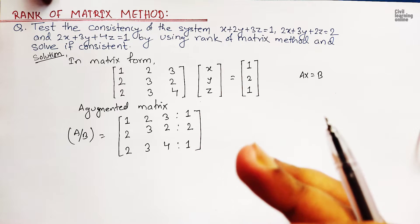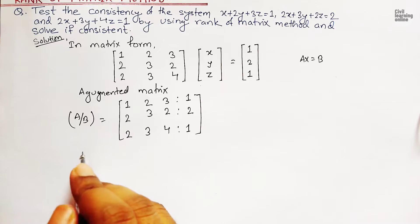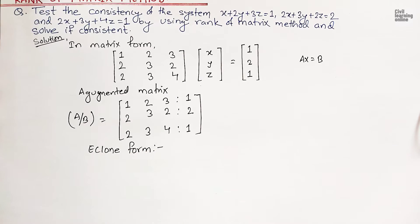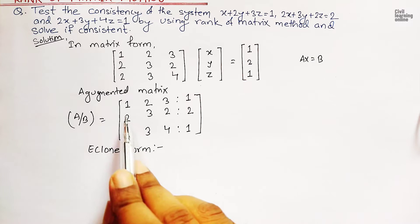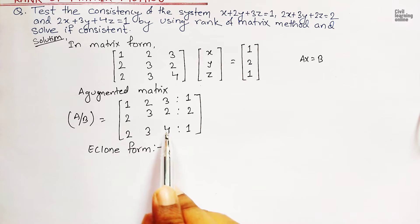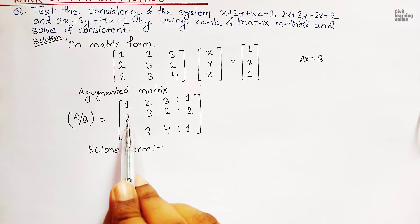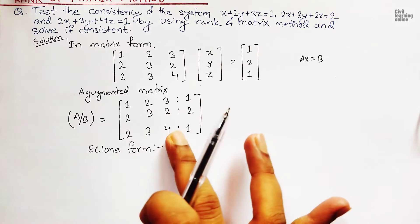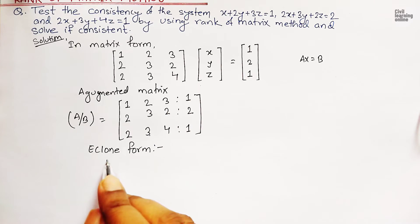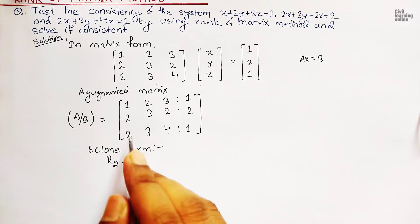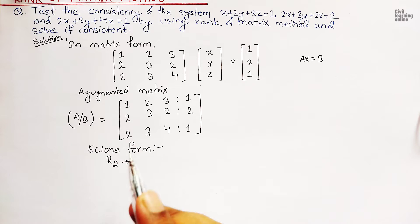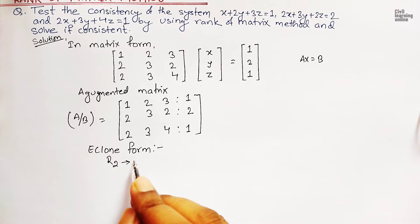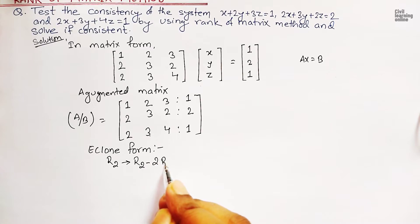Our third step is to use echelon form. In echelon form, we need to apply some operations so that the elements lying below the diagonal of this 3×3 matrix become 0. We have to convert the element 2 in row 2 and element 2 in row 3 to 0. For row 2, we apply the operation R2 implies R2 minus 2 times R1. Similarly, for row 3, we apply R3 implies R3 minus 2 times R1.